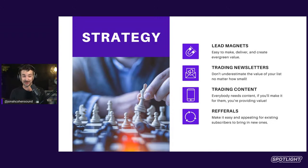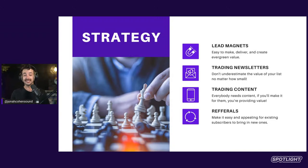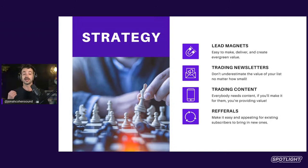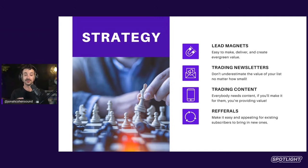So what are the strategies we're talking about? I'm going to cover four strategies today. The first one is lead magnets — we've gone deep on these, they're easy to make, deliver, and create evergreen value. Then we're going to cover trading newsletters, where regardless of the size of your audience, you can trade audiences: I'll feature you if you feature me. Trading content is another one — making content for people in exchange for them sharing it and calling you out. And referrals is a little more bottom-of-funnel, but it's a system you should have set up so people have an incentive to recommend your newsletter to others.